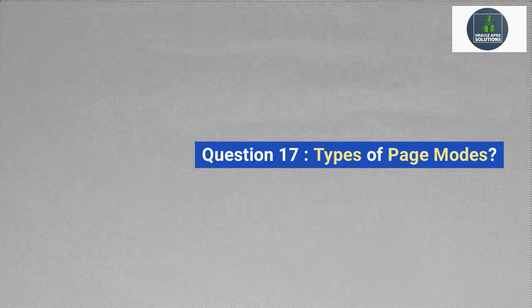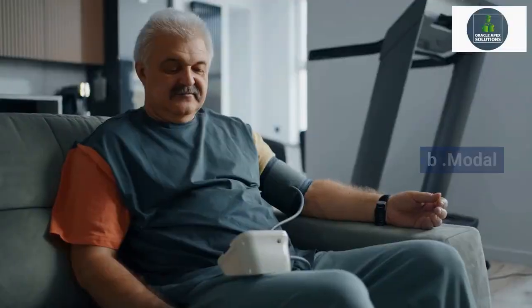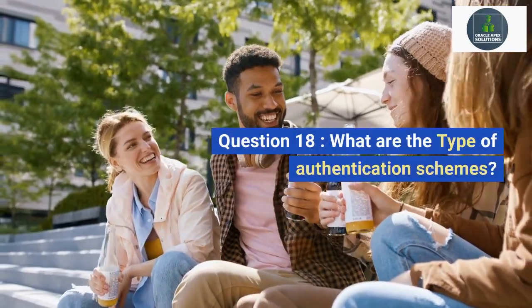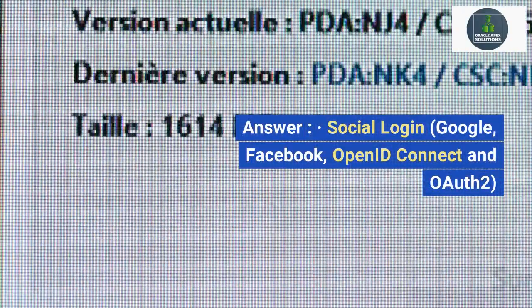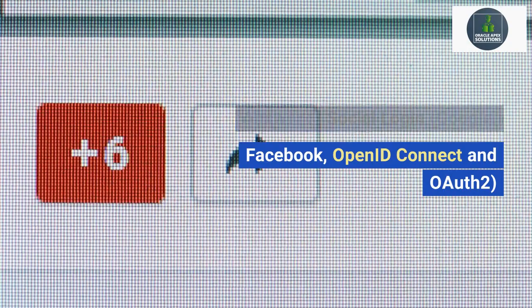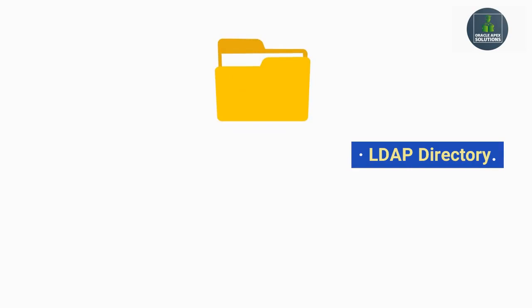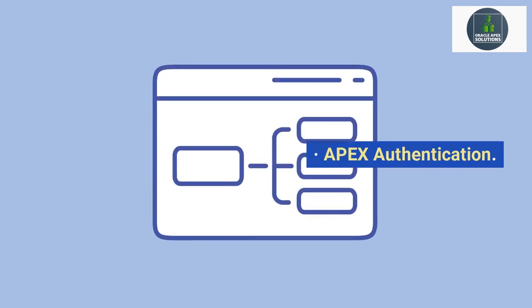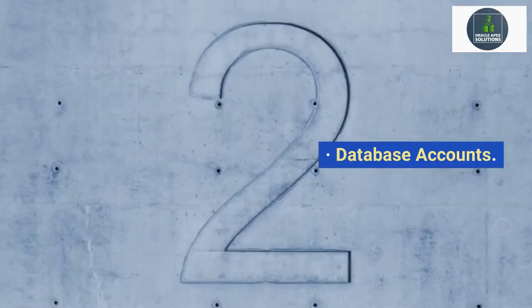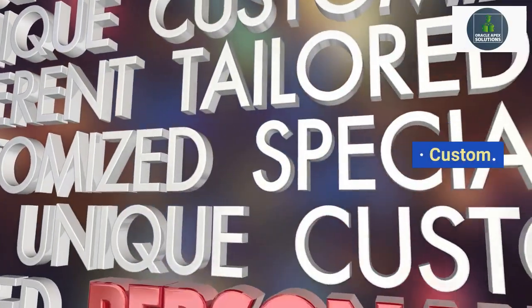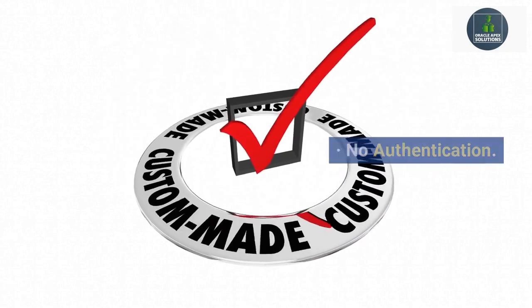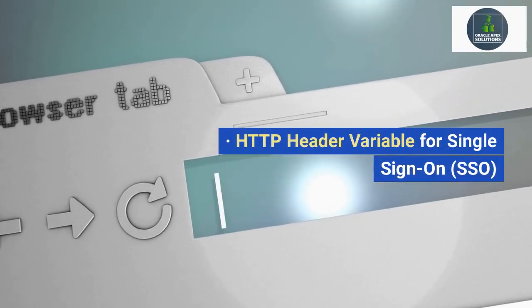Question 17: What are the types of page modes? Answer: A. Normal, B. Modal. Question 18: What are the types of authentication schemes? Answer: Social Login (Google, Facebook, OpenID Connect and OAuth 2), LDAP Directory, APEX Authentication, Database Accounts, Custom, No Authentication, HTTP Header Variable for Single Sign-On (SSO), and Oracle Application Server Single Sign-On.